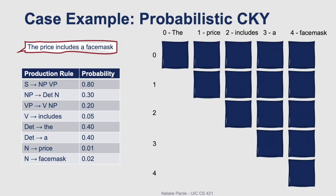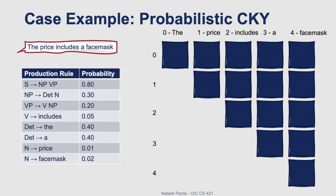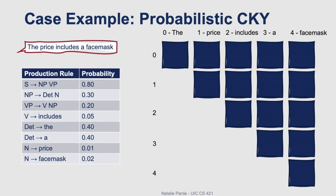We can walk through a case example to see how this works. Let's say we have an input: "The price includes a face mask" — a pandemic version of the example we have in the textbook. We have our small set of production rules already in Chomsky normal form, plus their probabilities of occurring, and then we have our matrix, where we're focusing on the upper triangular portion.